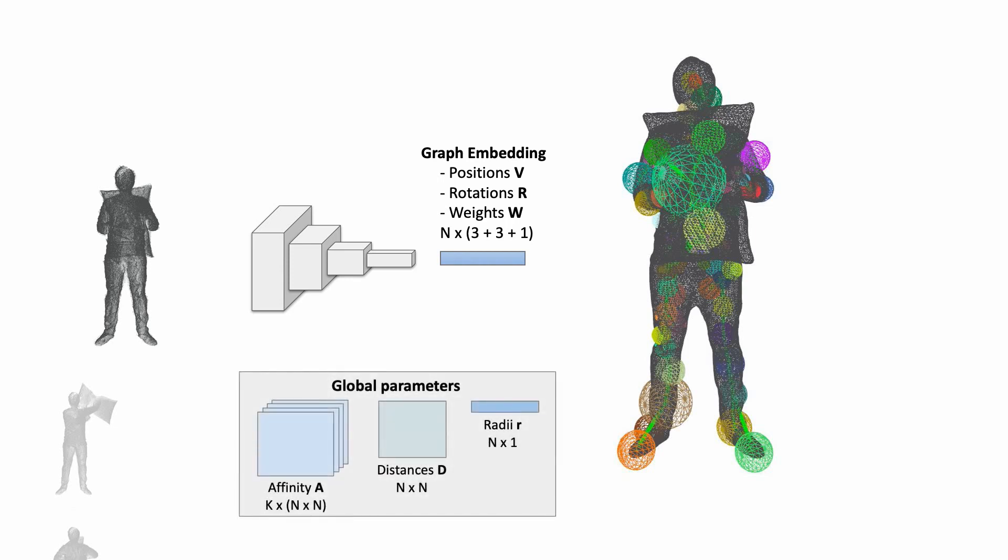In addition to these per-frame graph components, we employ a globally consistent graph structure, represented as an affinity matrix, an edge-length matrix, and radii of the nodes used for blending.